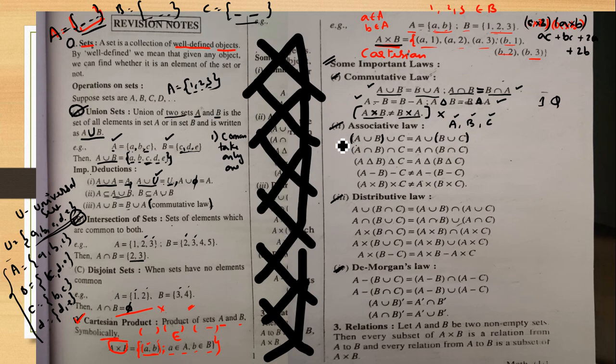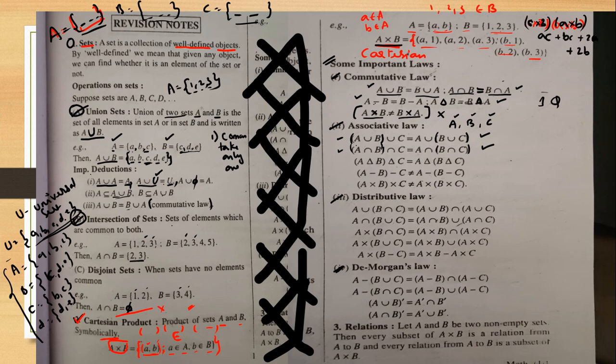Similarly for intersection: A intersection (B intersection C) equals (A intersection B) intersection C — only the bracket changes. Associative property exists for union and intersection. Also exists for delta and minus — wait, actually minus does NOT have associativity. And multiplication exists but cross does NOT.